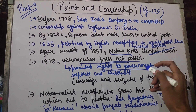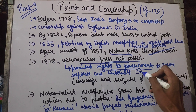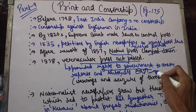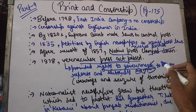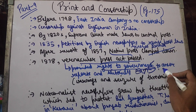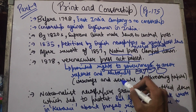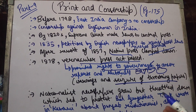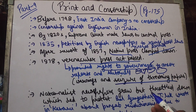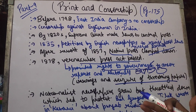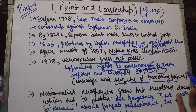So first of all, when there was no problem, newspapers were given a warning. If they did something wrong again, the press was seized — meaning they couldn't print. They were closed down and their equipment could be seized so that they couldn't print anymore.